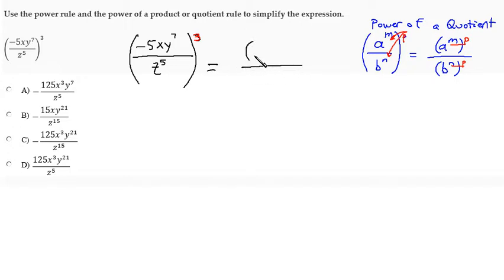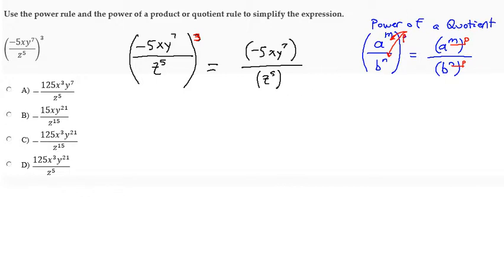Everything in the numerator gets its own set of grouping symbols. Everything in the denominator gets its own set of grouping symbols. Then the external power is going to apply to the outside of these grouping symbols — here comes that 3.